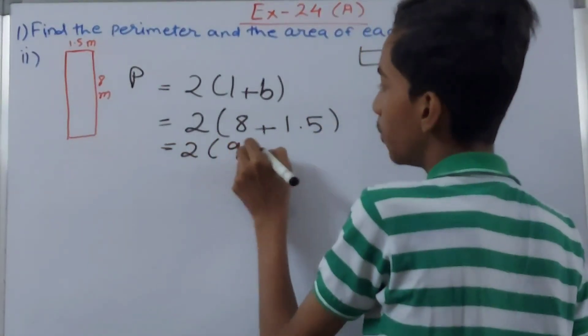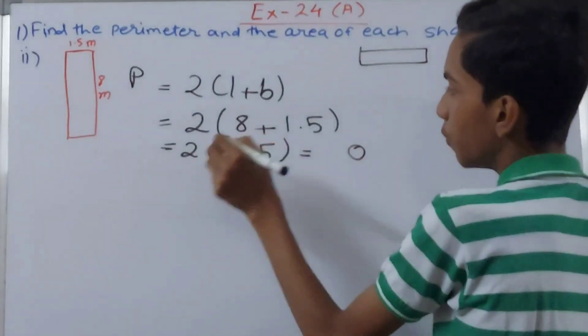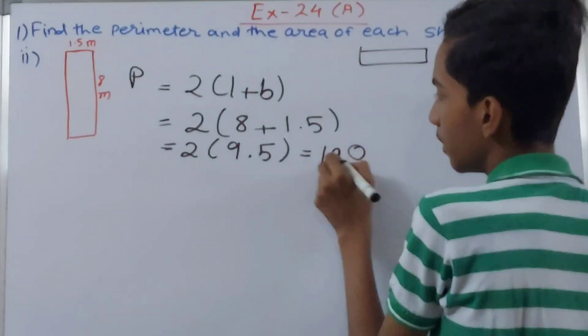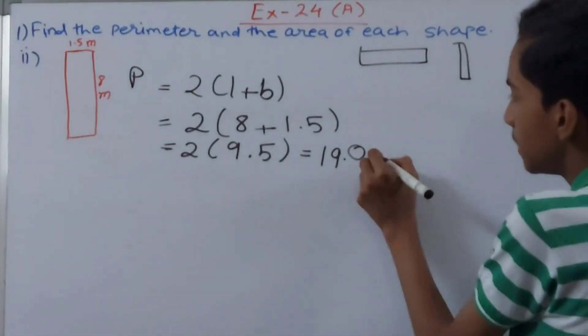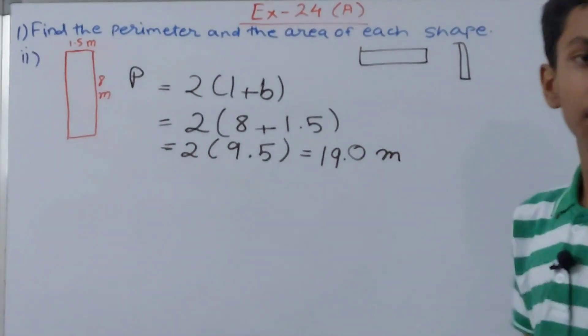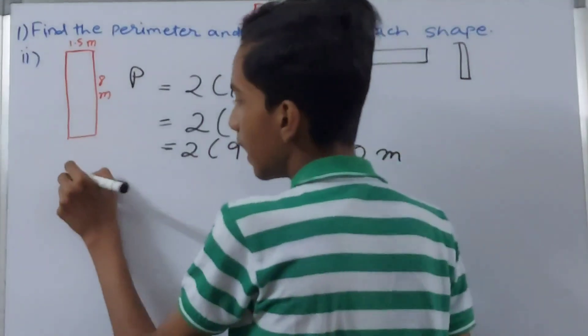That will give us 2 times 9.5, and that will be 19 meters. This is what it will be, 19 meters. This becomes our perimeter. And now the area.